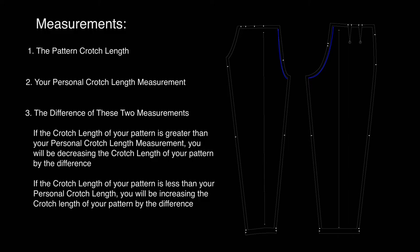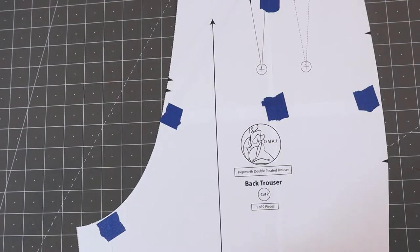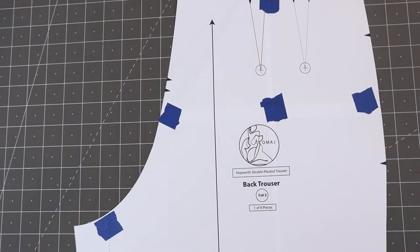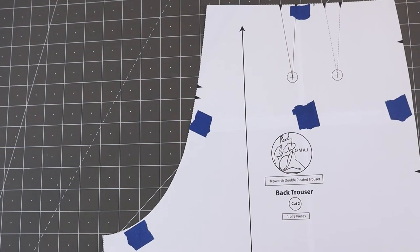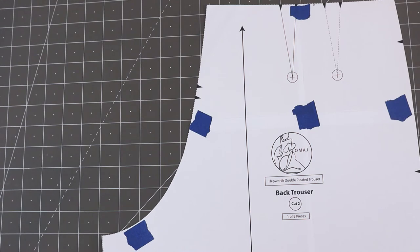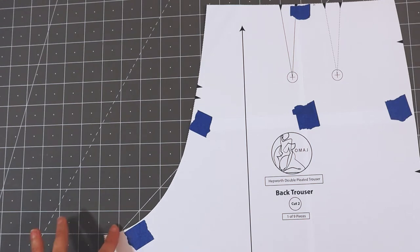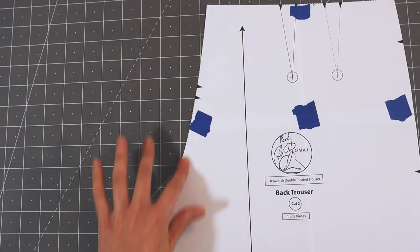Most often we would be increasing or decreasing the crotch length on the back pattern piece, because this area tends to be more curvaceous than the front — though this isn't always the case. You know your body best, so if you need to make changes to both front and back areas you can do so, but you'll want to take individual measurements of your front and back crotch lengths and apply the differences using this same technique.